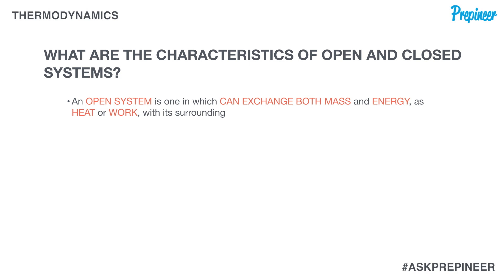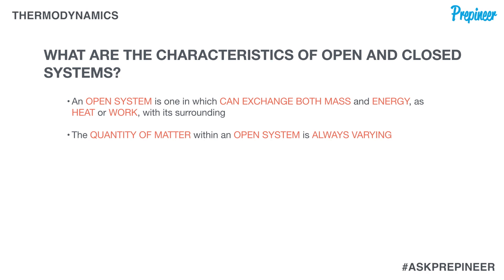An open system can exchange both mass and energy — as heat or work — with its surroundings. The mass within the system may or may not be constant, and the processes occurring take on a flow-type nature. Water pumps, engines, boilers, turbines, and heat exchangers are all examples of open systems. Most engineering machines and equipment we work with in the real world are open systems.